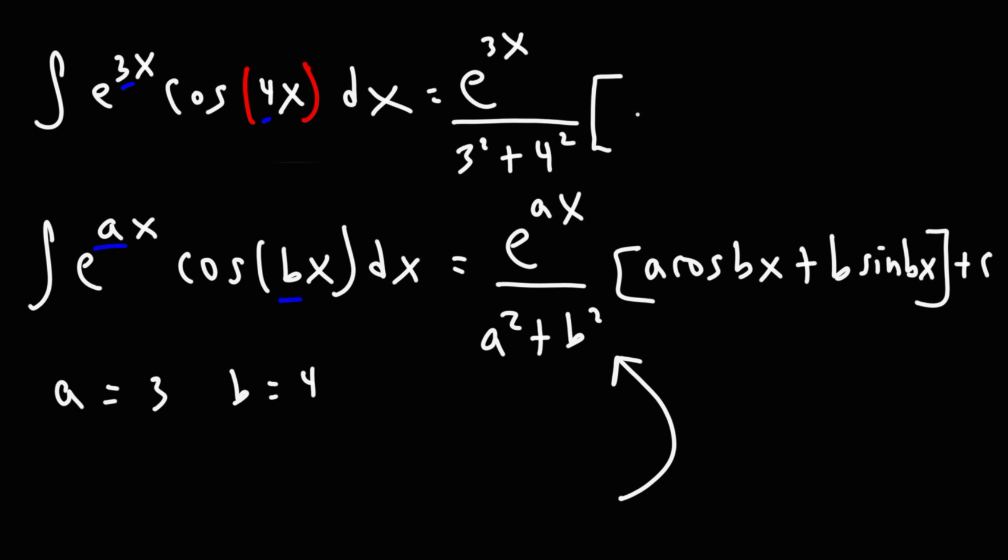Now, going back to this problem, we have a cosine bx. A is 3, b is 4, so 3 cosine 4x plus b, which is 4, and then sine bx or 4x. And then finally, plus the constant c. So that right there is the answer.